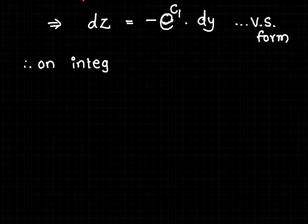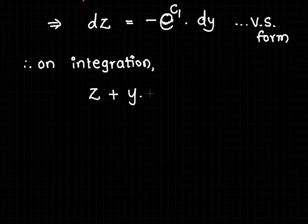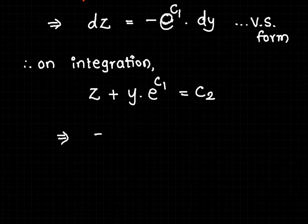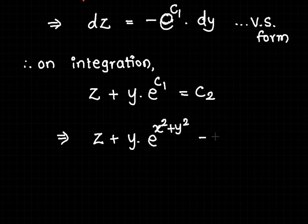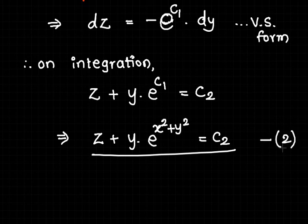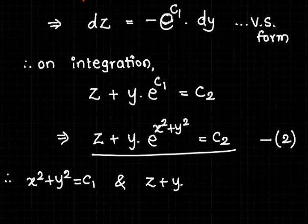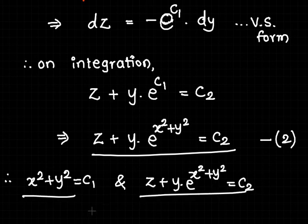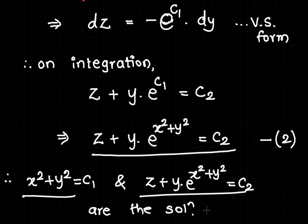On integration we get z + y · e^(c₁) = c₂. Substituting back c₁ = x² + y², we rewrite it as z + y · e^(x²+y²) = c₂. This is solution number 2. Therefore, from equations 1 and 2, the required solutions of the given symmetric simultaneous differential equation are x² + y² = c₁ and z + y · e^(x²+y²) = c₂.